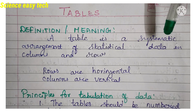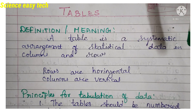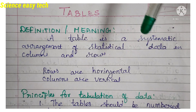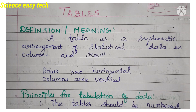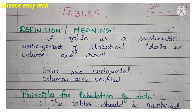A table is a systematic arrangement of statistical data in rows and columns. It is a step-by-step, sequential arrangement of statistical or numerical data in columns and rows. We all know that rows are represented horizontally, whereas columns are represented vertically.